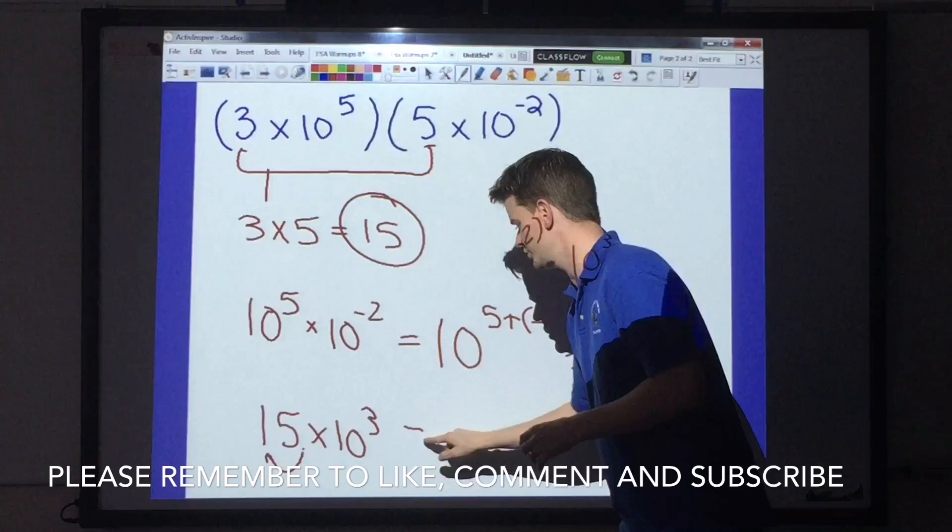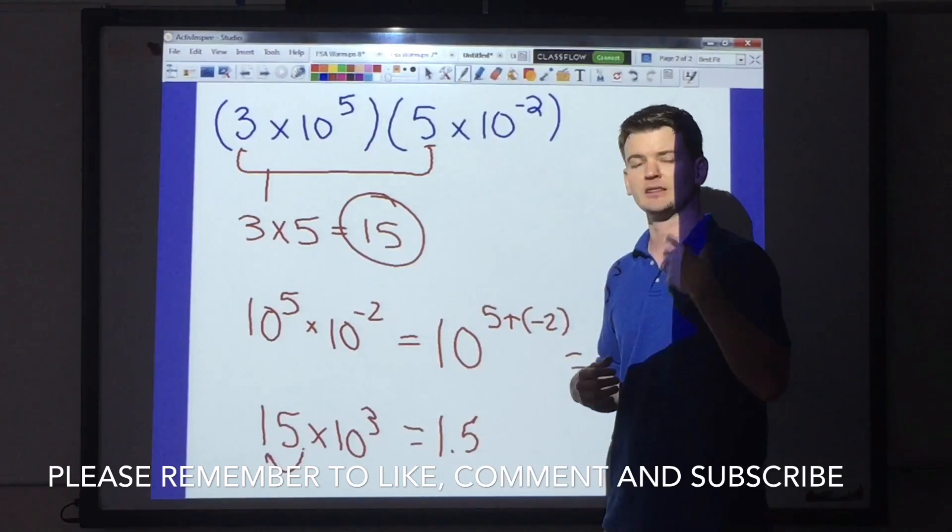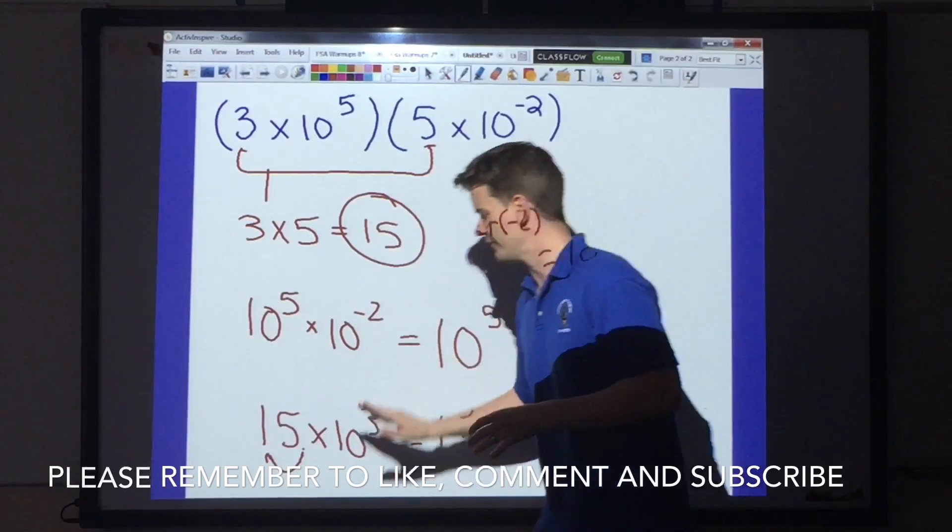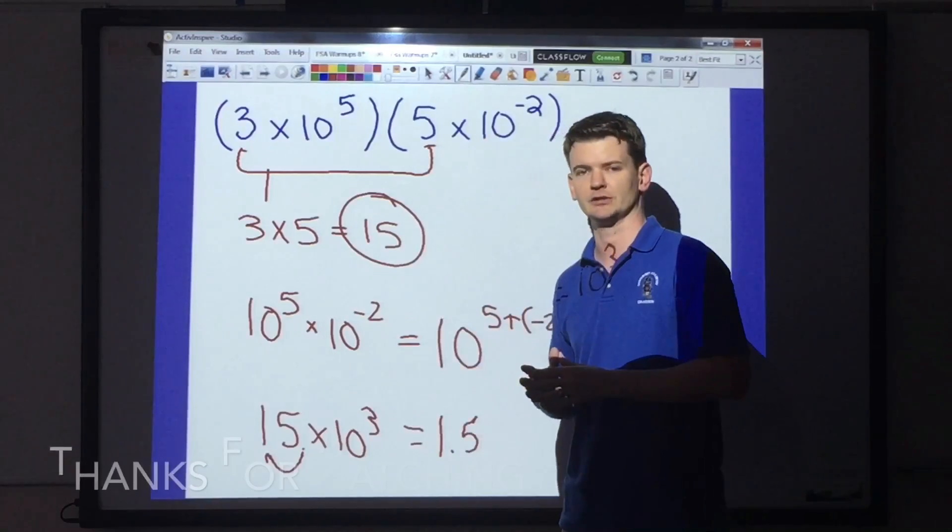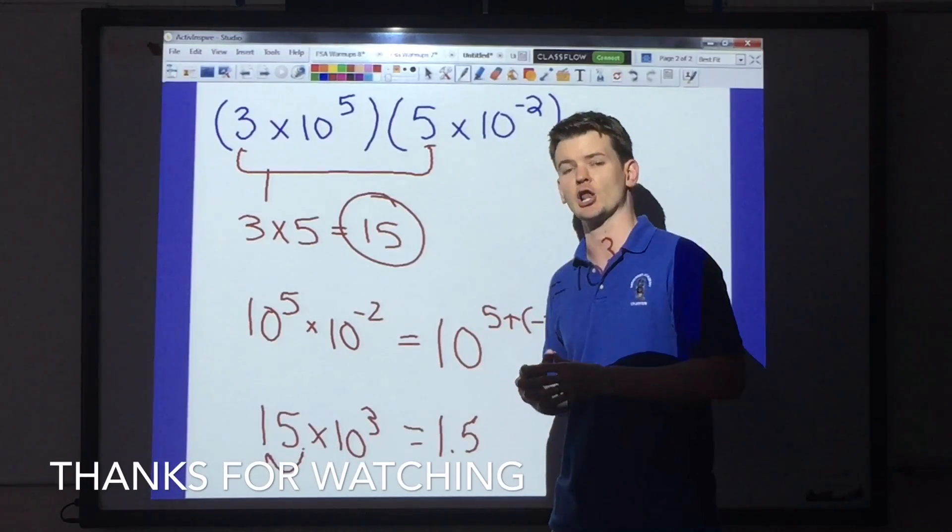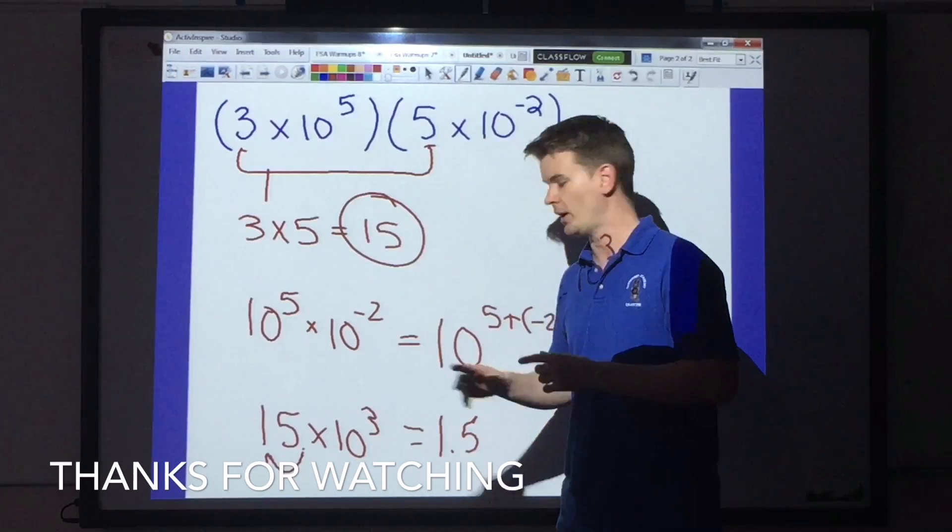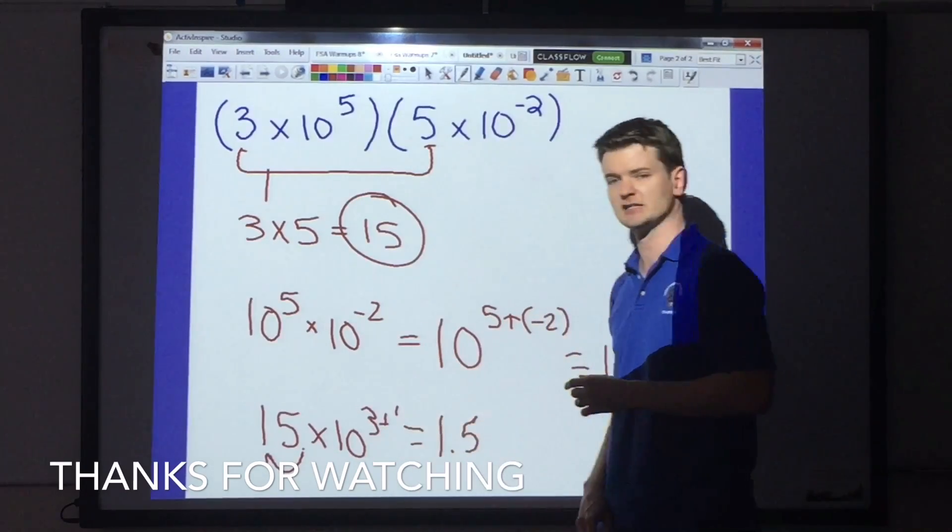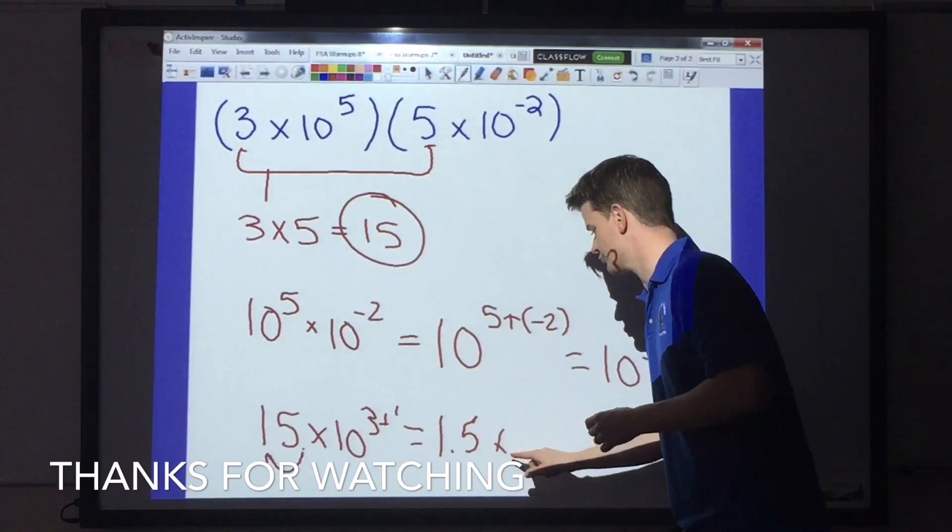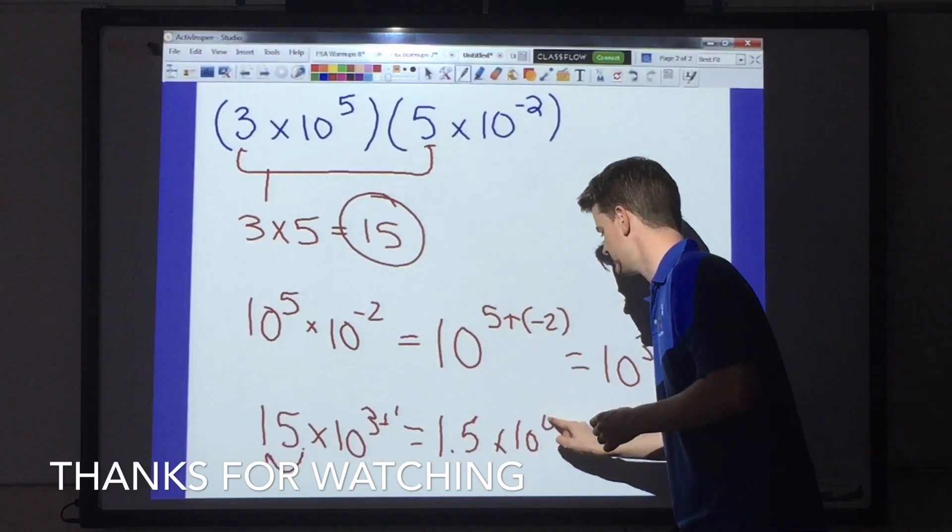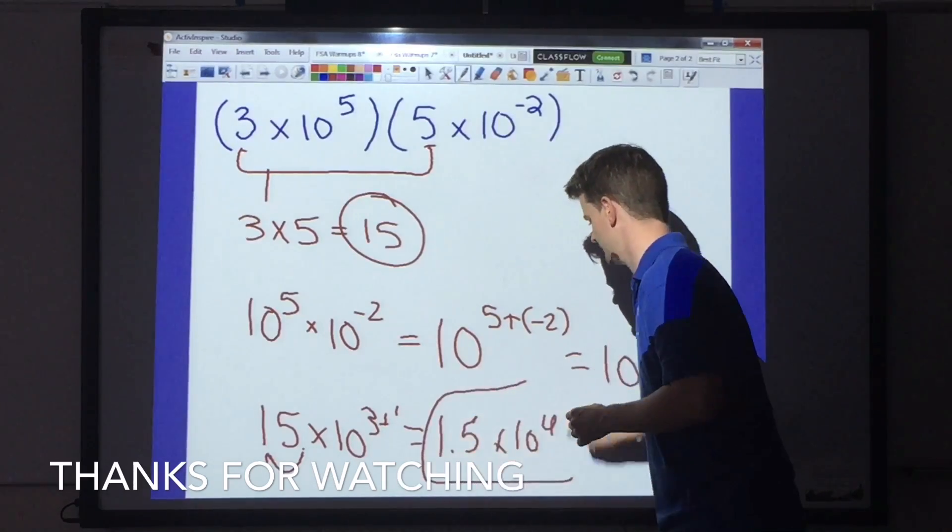That's going to give me a good factor now of 1.5. But there's something else that has to happen. Whenever my factor gets smaller, my exponent has to get larger. I move this decimal one time, so I'm going to have to add one to the exponent here. And my final answer will be 1.5 times 10 to the 4th power.